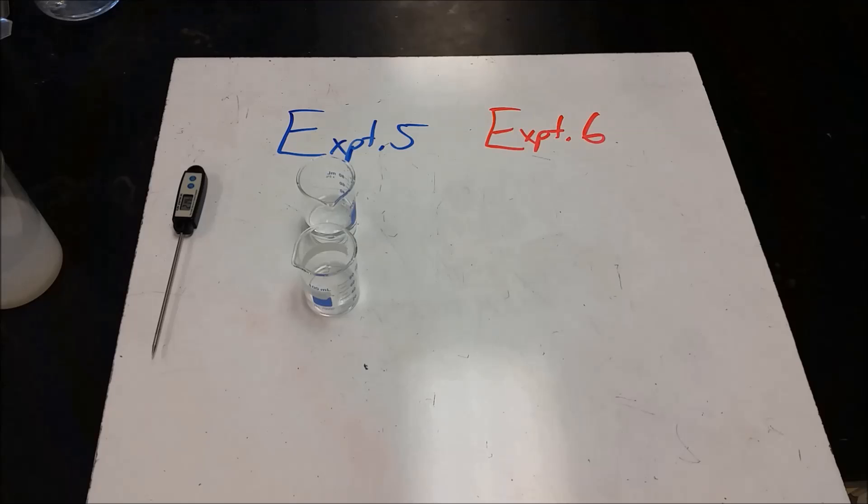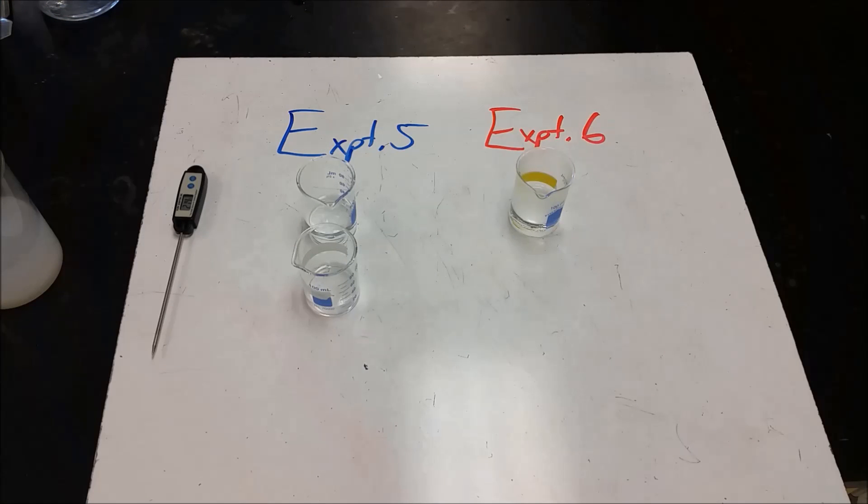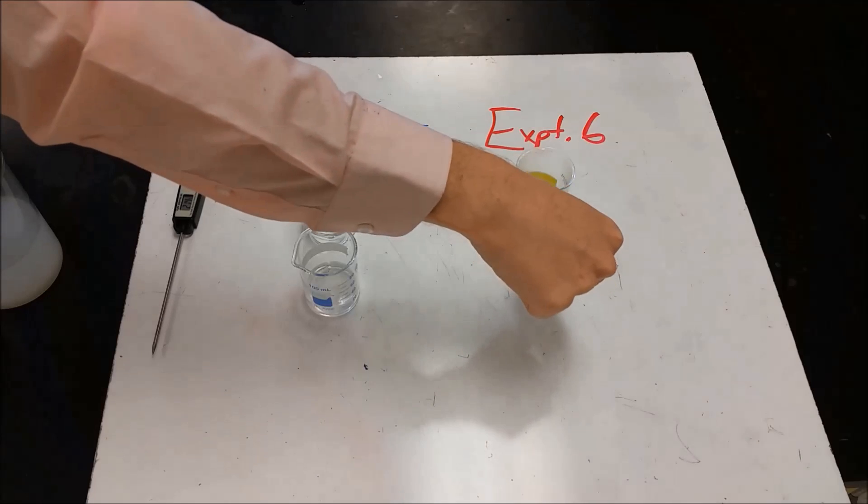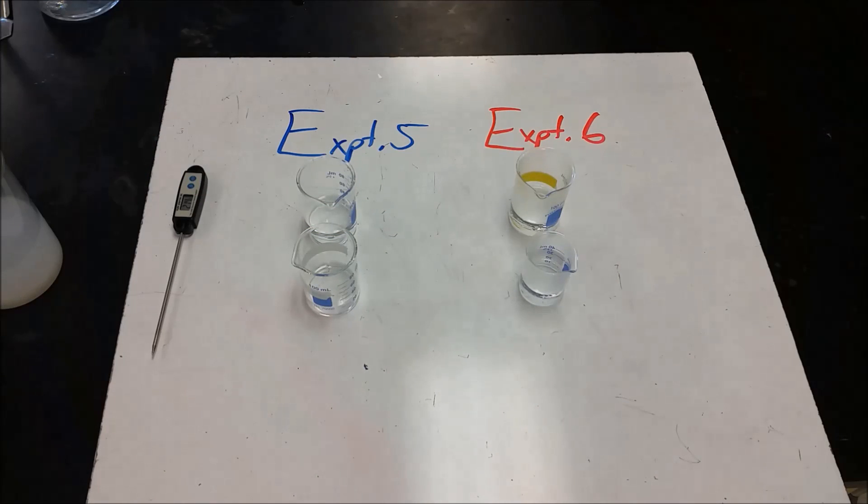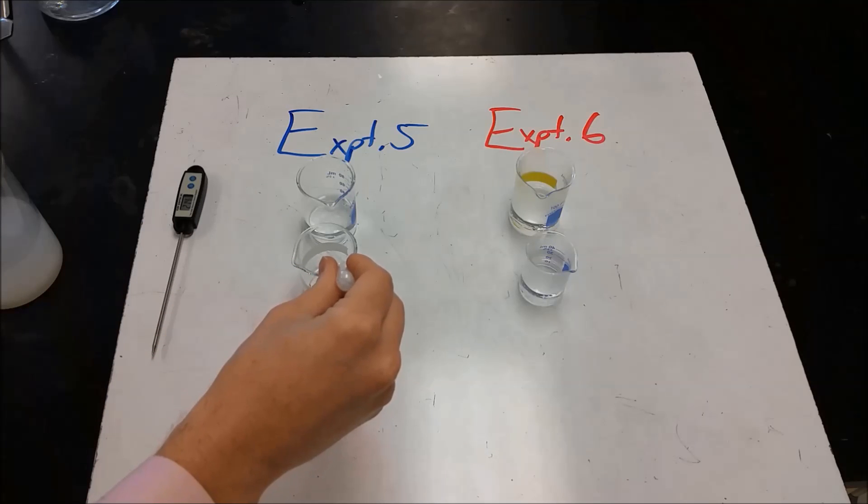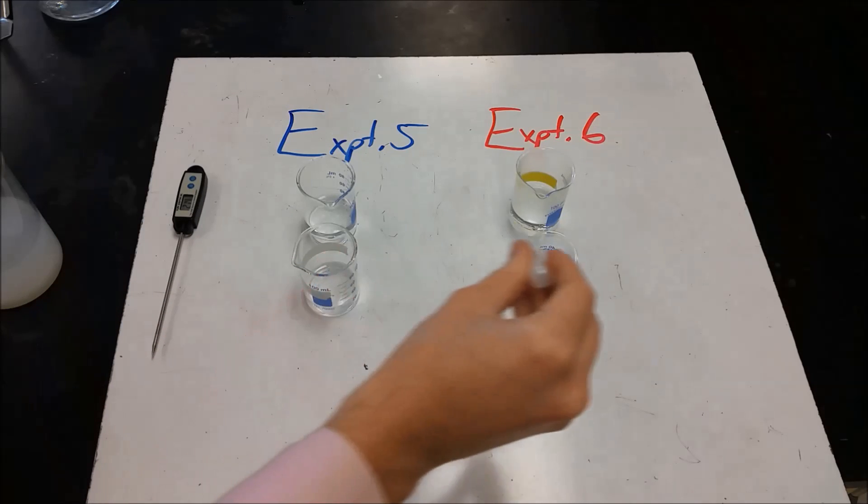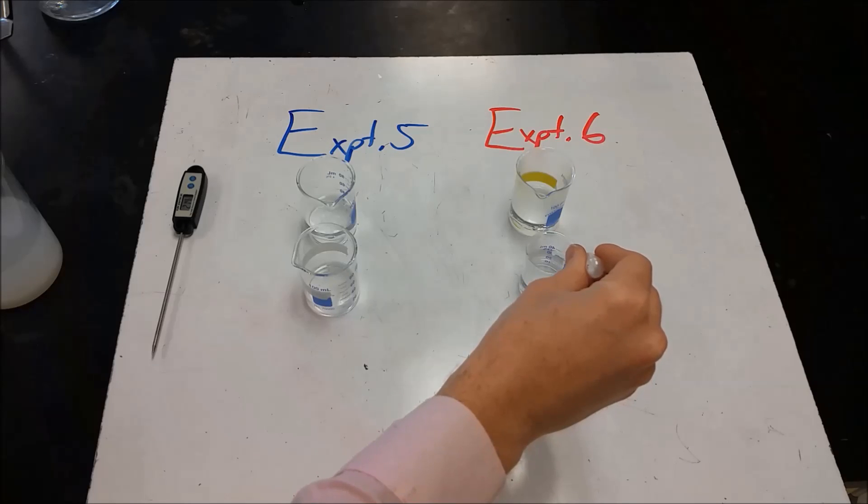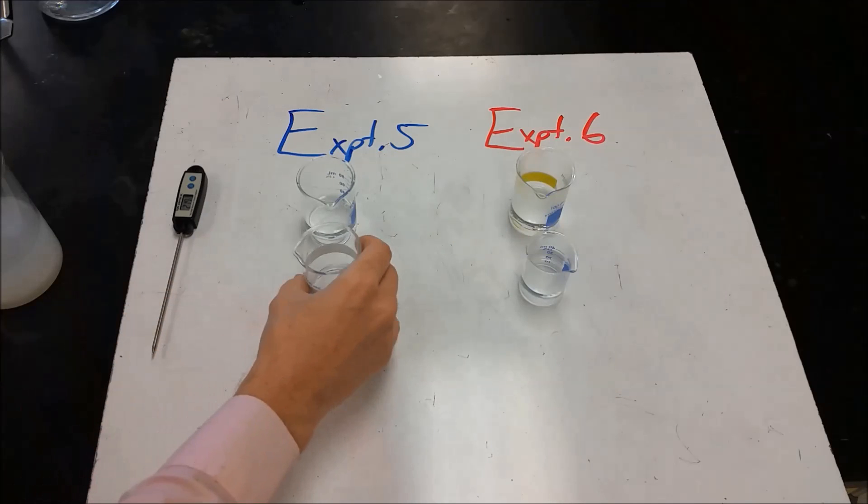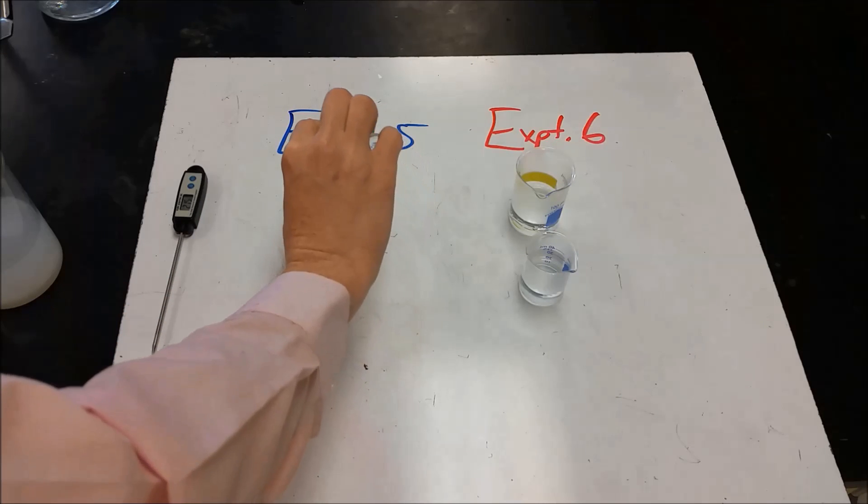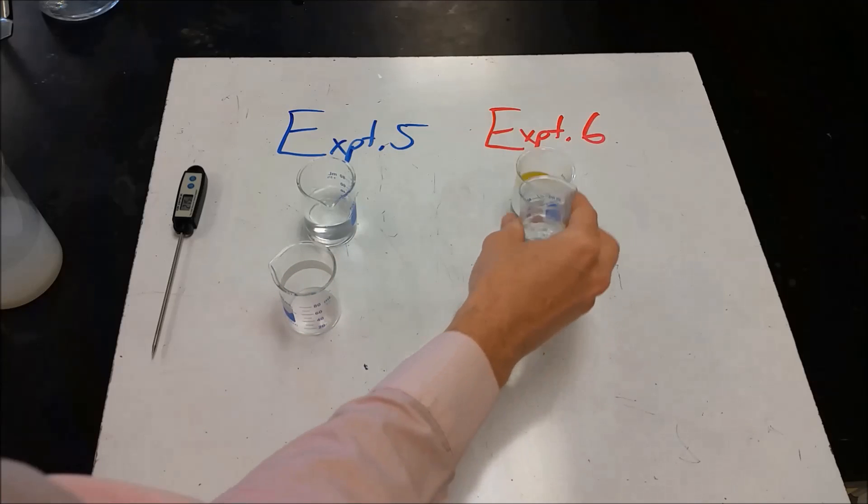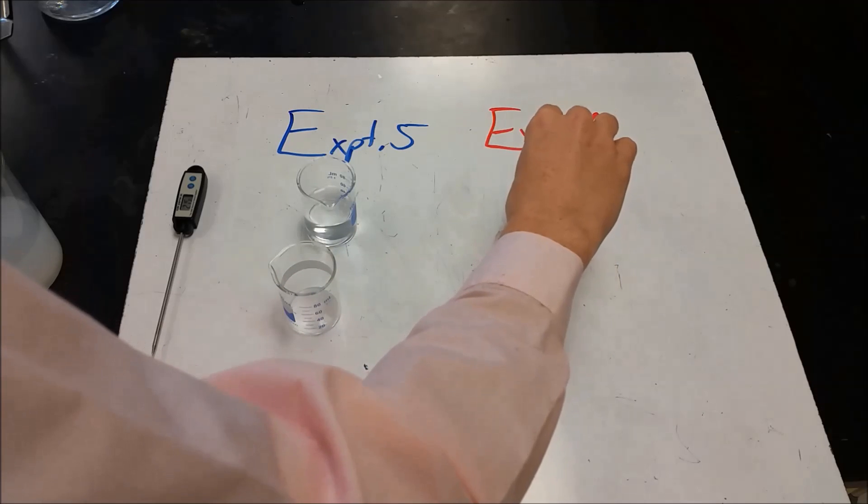So now in our second experiment, experiments five and six, we're going to be doing at different temperatures, and we're going to use that to figure out the activation energy. So experiment six here is at a high temperature. Experiment five is at a lower temperature. So we're going to add our indicator, and we will mix the cool, mix the warm.